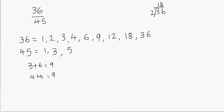How about 5? Yes, it is a factor. To check if a number is divisible by 5, look at the digit in the ones place — if it's 0 or 5, the whole number is divisible by 5. For example, 1000 ends in 0, so it's divisible by 5. Here, 45 ends in 5, and we know 5 times 9 is 45, so 5 is a factor of 45.